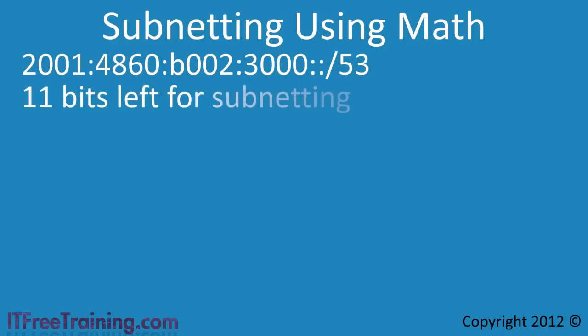This leaves us with 11 bits for our subnet ID. Let's say for this example we need 30 subnets or at least we think that this is the most we are ever going to expand to. The next step is to work out how many bits are required to support 30 subnets.